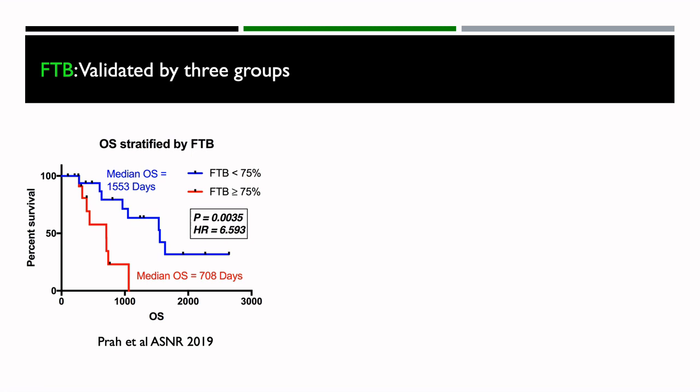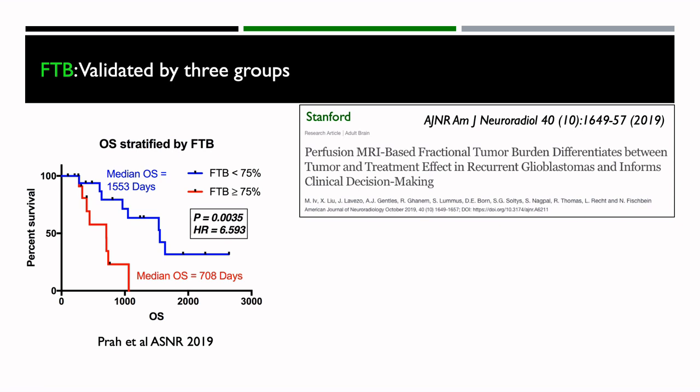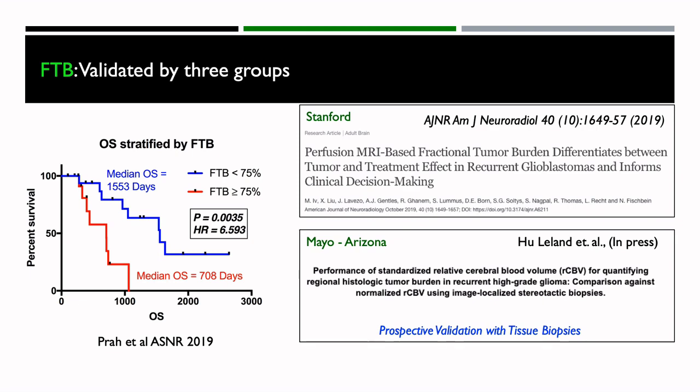Looking at the numbers using a Kaplan-Meier survival curve for overall survival, we see that if the fractional tumor burden is greater or less than 75% of the entire enhancing lesion, there's a clear difference in predicted overall survival. Fractional tumor burden has also been evaluated in a study at Stanford showing it was very informative for clinical decision-making, and more recently a prospective study at Mayo Clinic in Arizona validated the method with tissue biopsies.